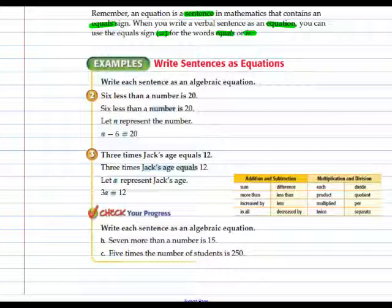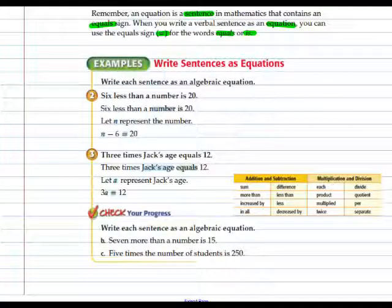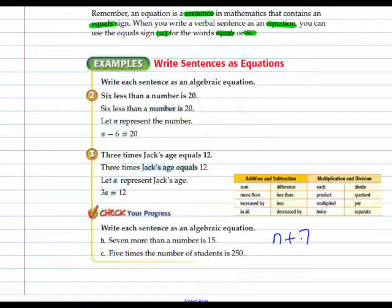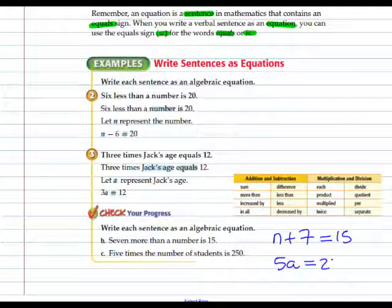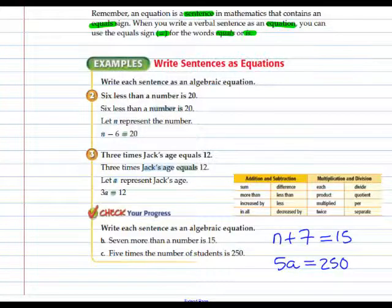Write each sentence as an algebraic expression. 7 more than a number is 15, so 7 more than a number is 15. 5 times the number of students is 250, so 5a equals 250. An addition equation and a multiplication equation.